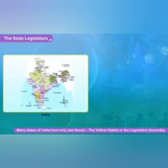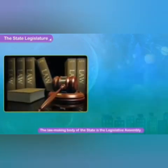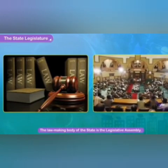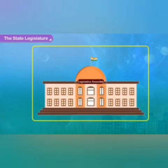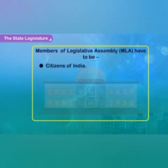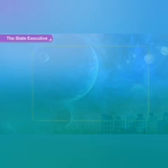The lawmaking body of the state is the legislative assembly. The members of these assemblies are called Members of Legislative Assembly or MLAs. They are elected for a term of five years. MLAs must be citizens of India, more than 25 years of age, and should be on the electoral roll of the state concerned.